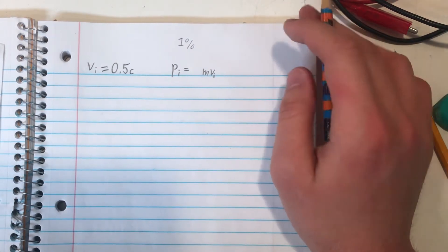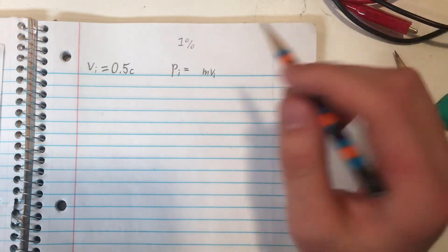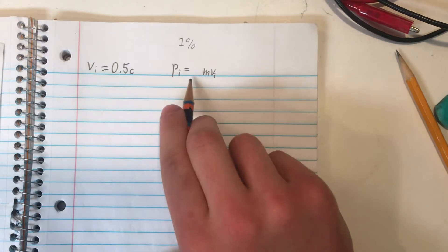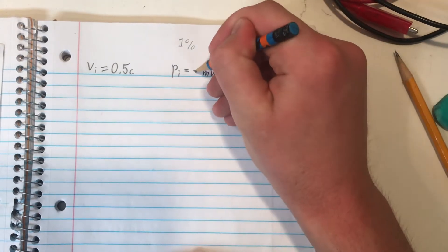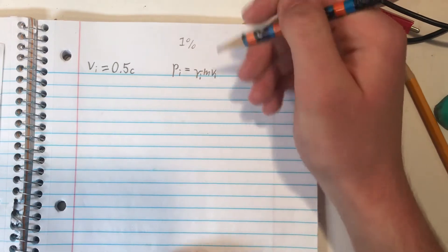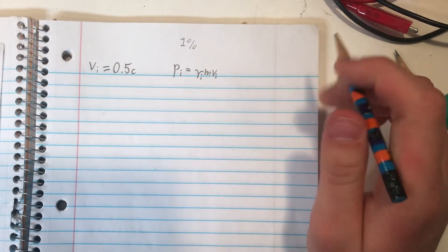So according to Einstein's theory of special relativity, the relativistic formula for momentum, when we're dealing with speeds this fast, is actually the same formula, except we're adding the Lorentz factor in, gamma. And I'll say sub i for that as well, because the Lorentz factor is based on the speed we're working with.